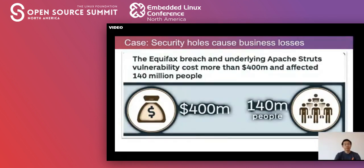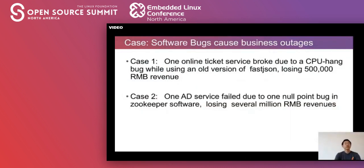Here are some cases. The first case is a very famous one: security holes cause business losses. The Equifax breach exploiting Apache Struts vulnerabilities cost more than $400 million and affects 140 million people. And there are another two cases caused by software bugs causing business outages.